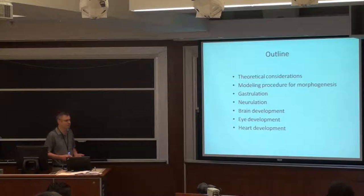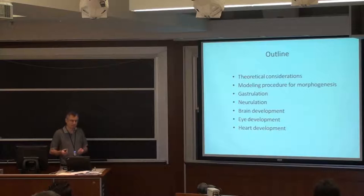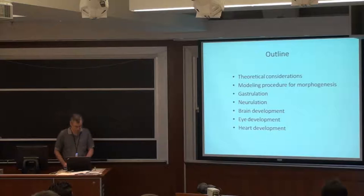Here's an outline of the topics I'm going to be talking about. First, I'll talk about the basic theory for modeling morphogenesis, then outline a procedure I recommend for modeling morphogenesis at the tissue level. Morphogenesis is a process observed at the tissue level, but driven by the cell level. Then I'll focus on several specific problems: gastrulation, which you've already heard about, and then organ development — neurulation, development of the neural tube, brain development, eye development, and finally heart development.